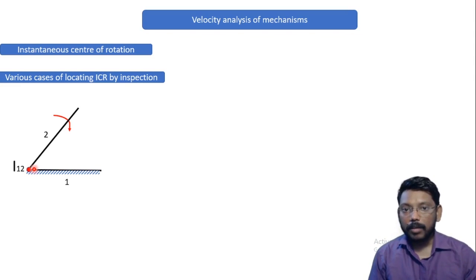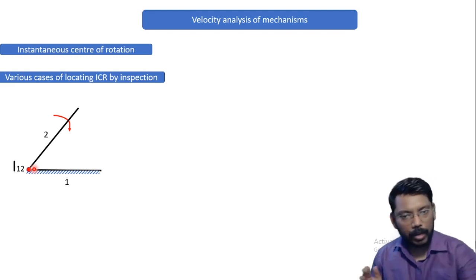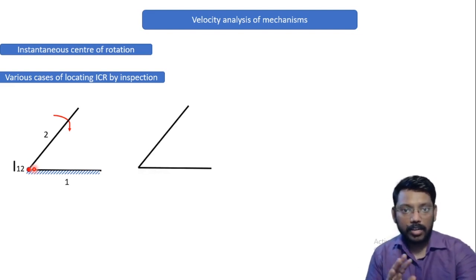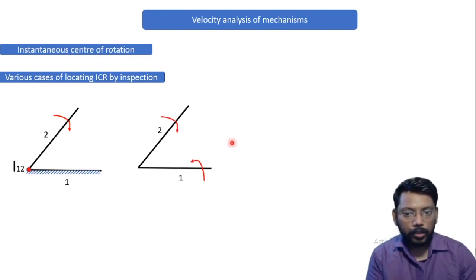Now what if we have a turning pair which one part is not fixed, then there will be changes or not. Let's look at the example. Again we are having two links and both the links are going to rotate. Now if I observe both the links are going to rotate about this point, then we will identify the ICR in that way.